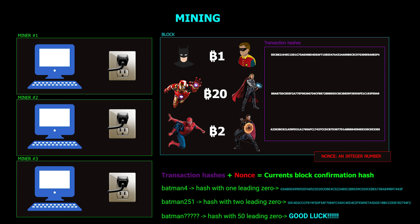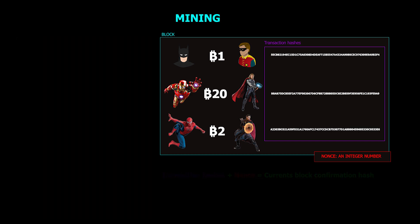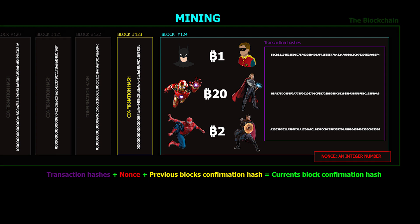Obviously, miners want to guess these nonces very quickly and rely on specialty hardware such as graphics cards and ASIC miners to do this. One detail to add is that the block being confirmed also relies on data from the previous block's confirmation hash — so that the previous block's hash, along with the transaction data of the current block and the nonce, are all hashed together to find that block's hash. A chain of blocks all reliant on each other is formed. If one tries to change data in a previous block, the subsequent hashes would be invalid, discarding that change. This forms the blockchain.